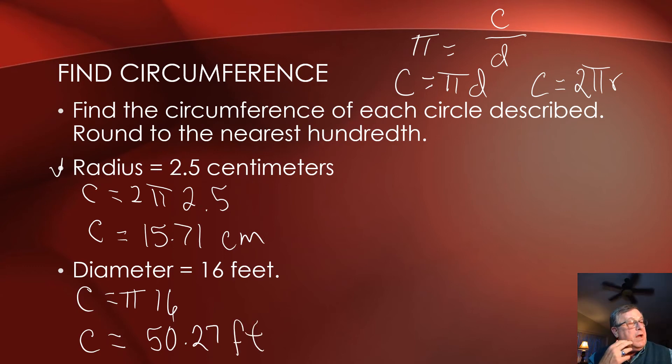To find the circumference, we have a formula using the irrational number pi, such that the circumference equals π times the diameter. Or if we know the measurement of the radius, we can say that the circumference is equal to 2 times π times r, or just 2πr.